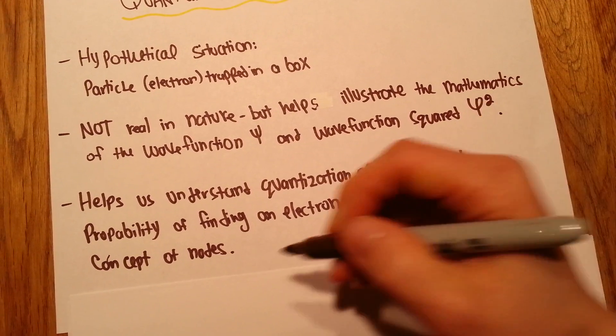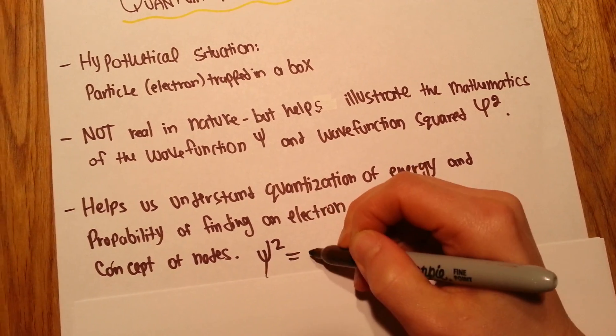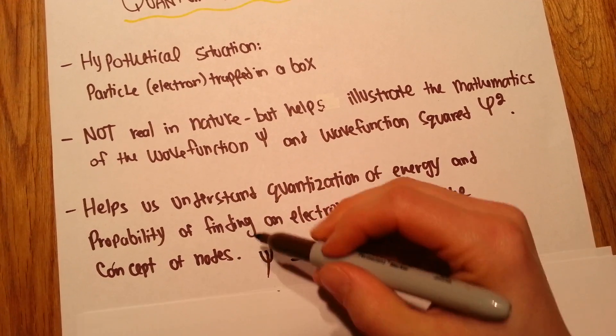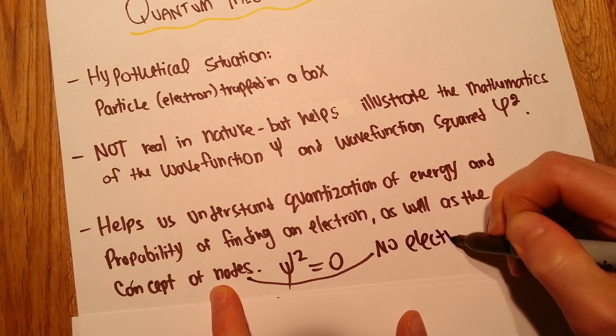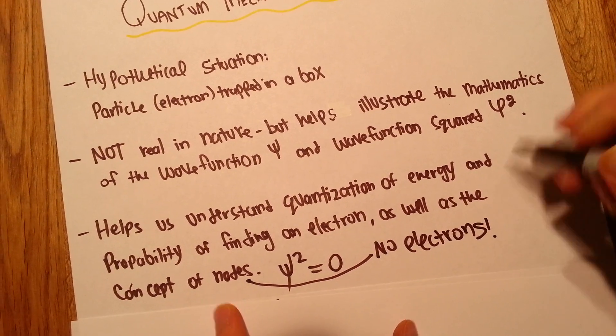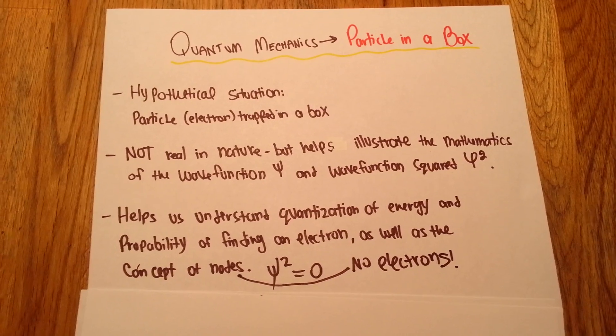Nodes are where the wave function is zero. Nodes are where we cannot find electrons. And we're also going to see it in the problems.